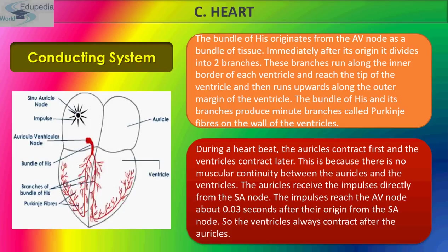The branches run along the inner border of each ventricle — the right and the left ventricle — reach the tip of the ventricle, and then run upward along the outer margin of the ventricle. The bundle of His and its branches produce minute branches called Purkinje fibers on the wall of the ventricles.